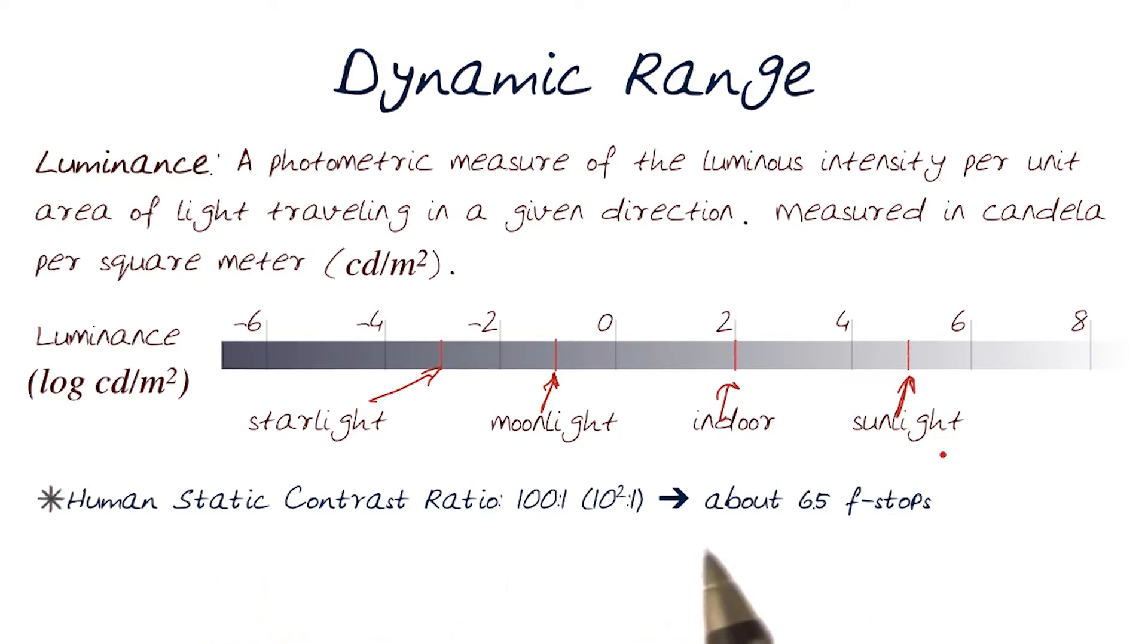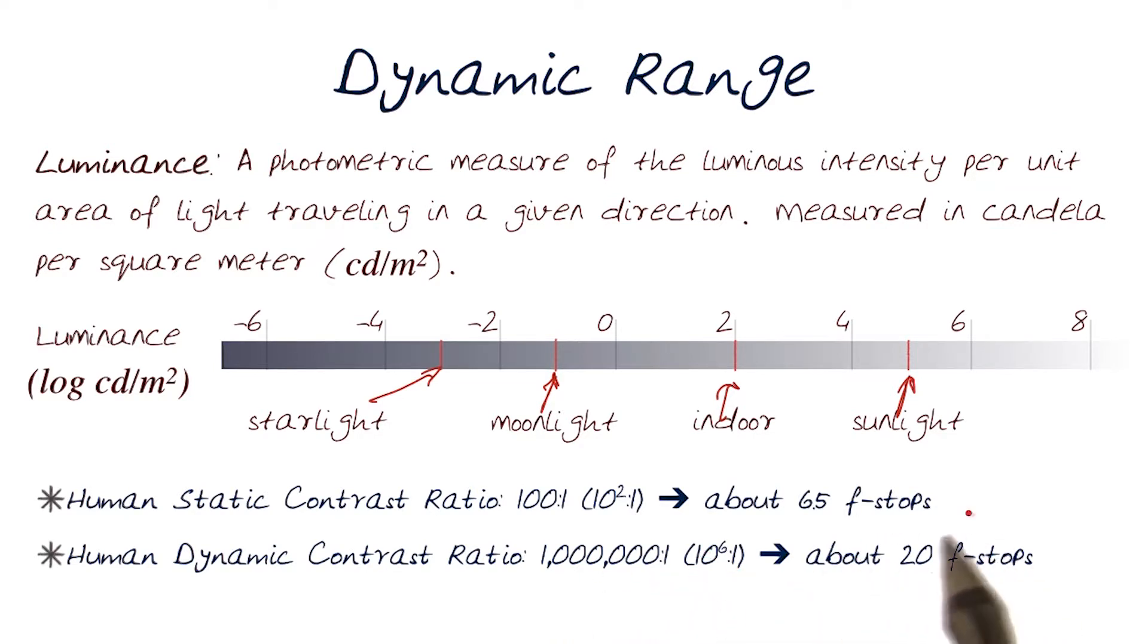Now, I do categorize this in two different ways. One is static contrast ratio. Another one is dynamic contrast ratio, when the scene is dynamically changing. In this case, a human vision system can actually do much better. We see a range from 1 million, 10 raised to 6, to 1. This can be captured with about 20 different f-stops. So notice the range goes from 6.5 to 20 when we go from static to dynamic.